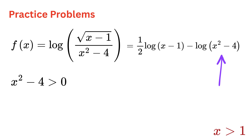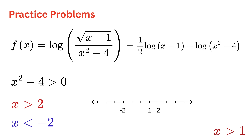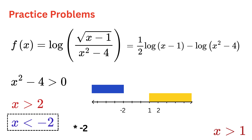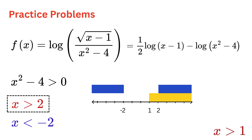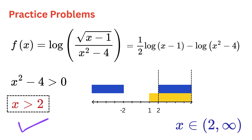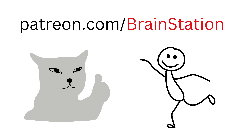For the second part, x² − 4 must be > 0, which means x > 2 or x < −2. Plotting both on a number line: x > 1 intersected with (x > 2 or x < −2) gives simply x > 2, or the interval (2, ∞). That's it — this way we can solve any domain problem with 100% confidence.